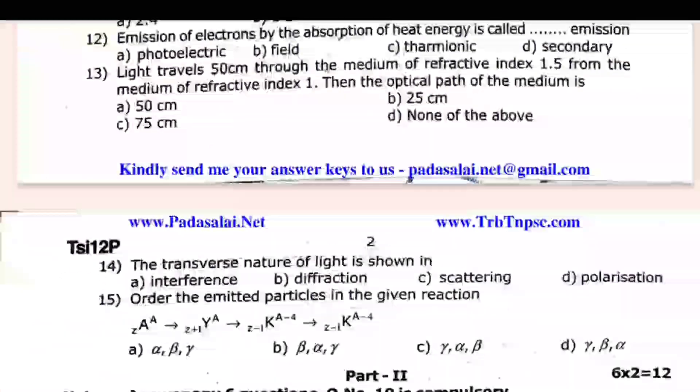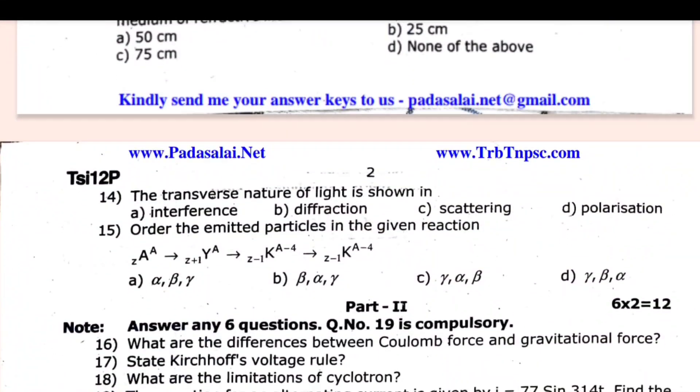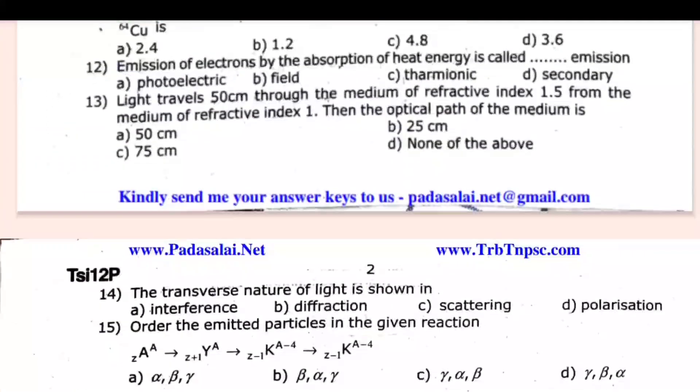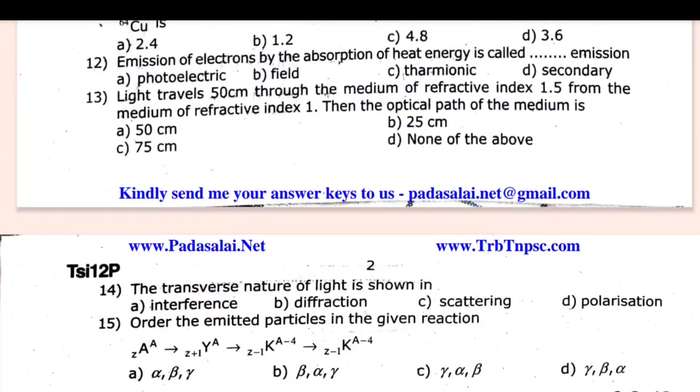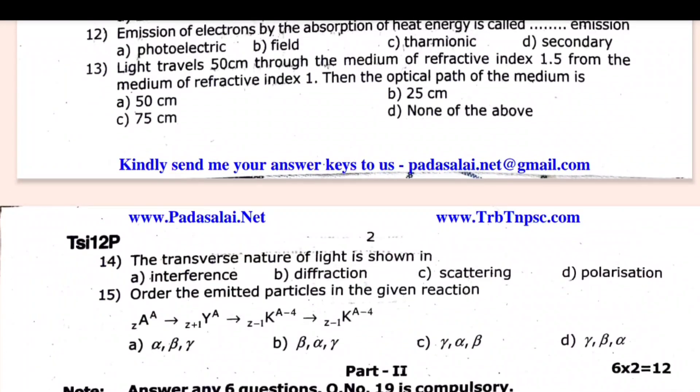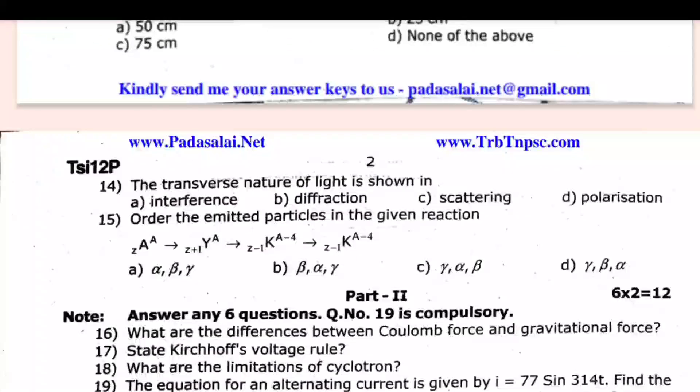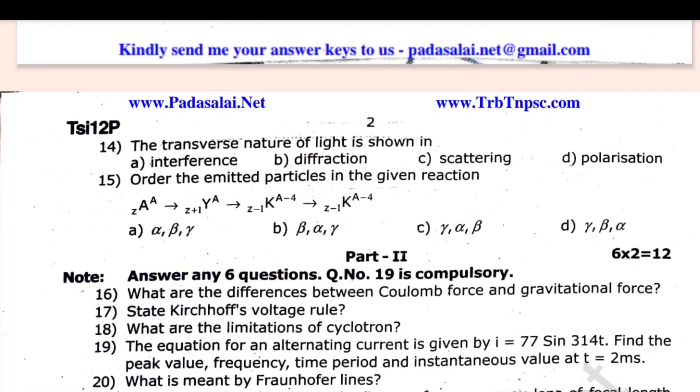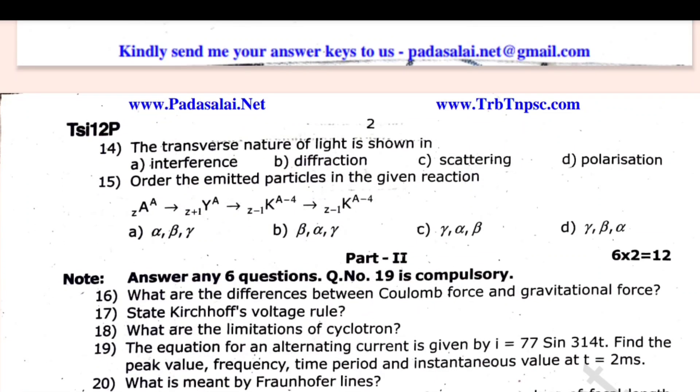Next, Part 2, 2 marks per 6 to 3. If you have a total of 9, choose it, compulsory. Now, difference between Coulomb force and gravitational force, Kirchhoff's voltage rule, limitation of cyclotron, what is mean by Fraunhofer lines, what is a photocell, mention the different types of photocells.